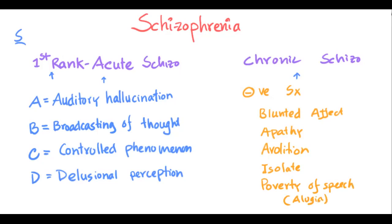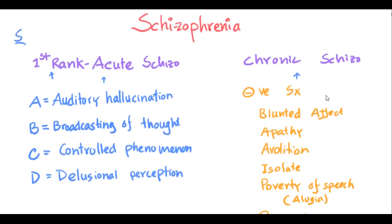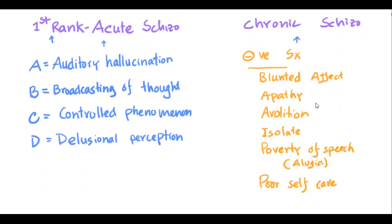Obviously, when you don't care about anything, you don't take care of yourself — that is poor self-care. Those are the features of chronic schizophrenia, also known as negative symptoms. The features are: blunted affect, where your face is mask-like and doesn't show any emotions.